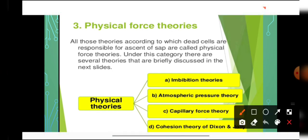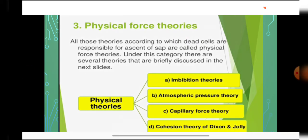Next are physical force theories. Physical force theories say that the dead cells — that is, xylem vessels and tracheids — are responsible for the process of ascent of sap. Different physical force theories have been put forward by different scientists, but the most widely accepted theory is the cohesion tension theory, given by scientists Dixon and Jolly.